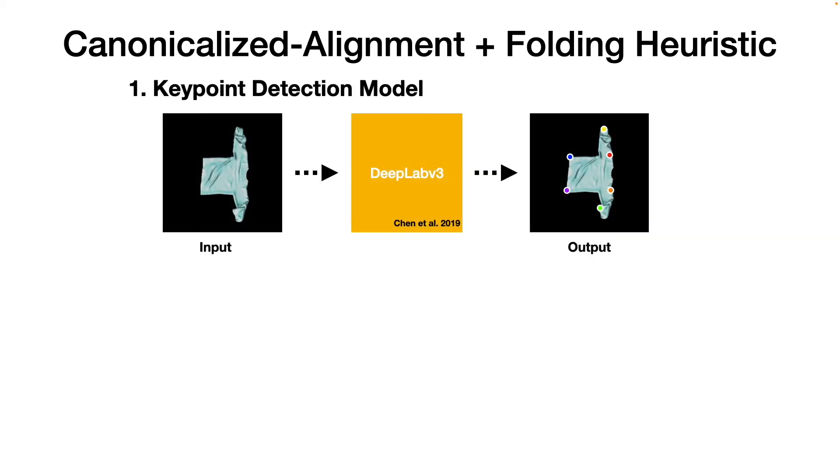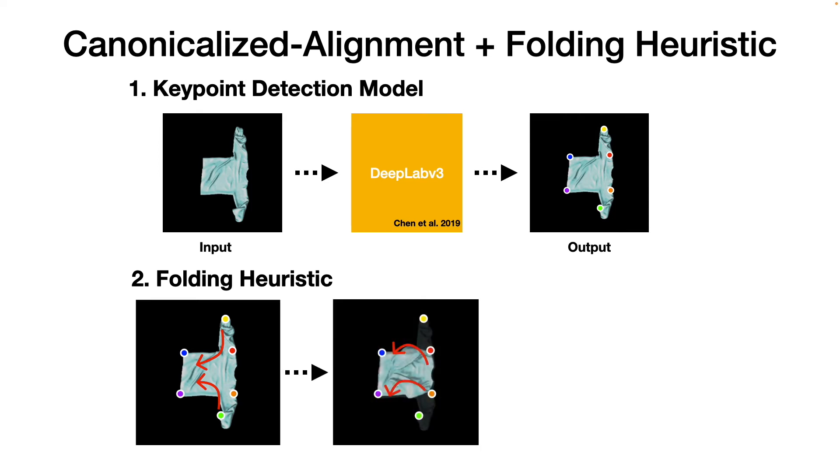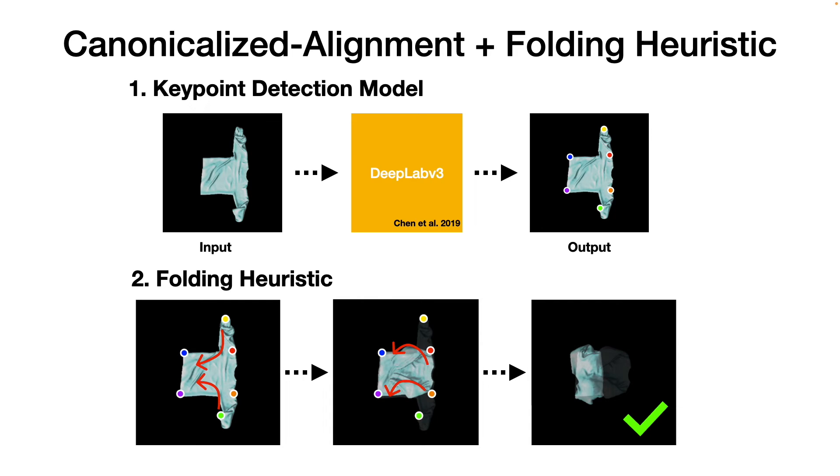We first train a keypoint detection model from simulated high-coverage cloth instances, and then we use this keypoint model to parameterize a folding heuristic that first grabs the wrist keypoints and brings them to the waist keypoints, folding the arms, and then grabs the shoulder keypoints and brings them to the waist keypoints, folding the shirt in half.